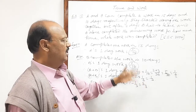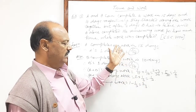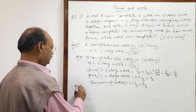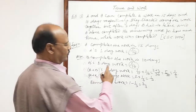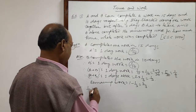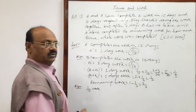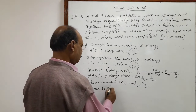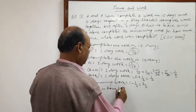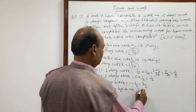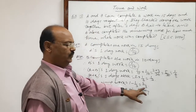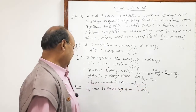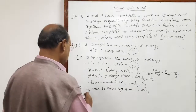We can easily calculate how much time will be required by A to complete this remaining 2/3 of the work. A's one day work is 1/15, meaning 1/15 part of the work is done by A in 1 day. So for 2/3 work remaining, we can use the unitary method to calculate the time required.